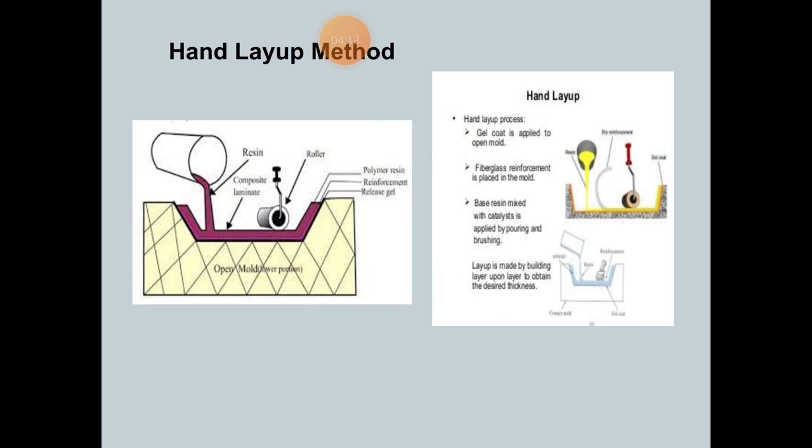The fibers or preforms are placed in the mold. The resin materials are applied using brush or roller. When the resin is applied, the brush or roller is used to impregnate the resin into the fabric to ensure enhanced interaction between successive layers of the reinforcement and the matrix material.